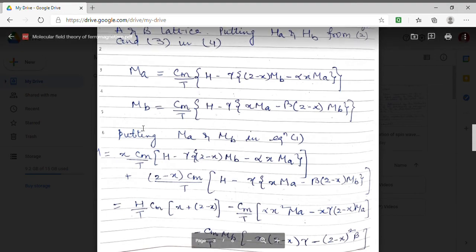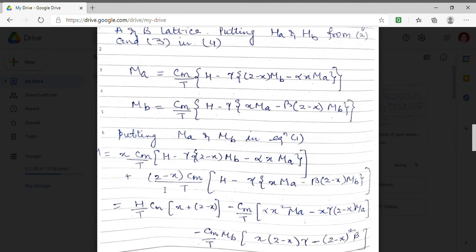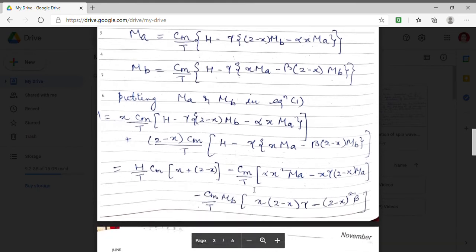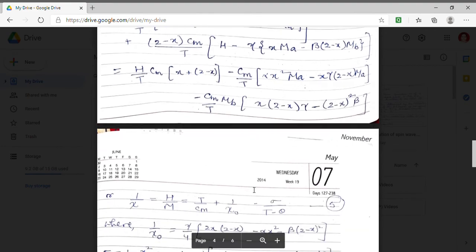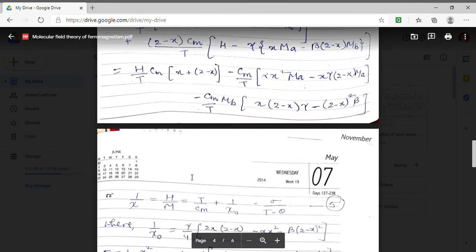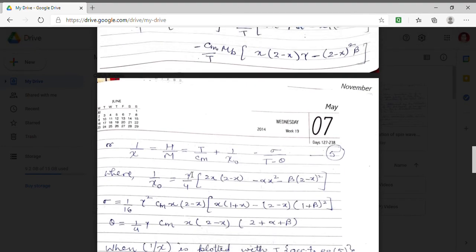Now we are collecting the similar type of terms. We have collected term. We have taken common H Cm upon T. Similarly in the second term Cm upon T is taken common and on solving the expression I get my expression to be 1 by Chi which means H by M to be equal to T upon Cm plus 1 upon Chi 0 minus sigma upon T minus theta.